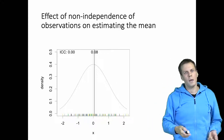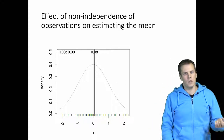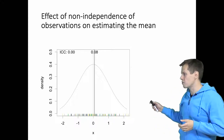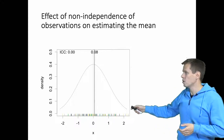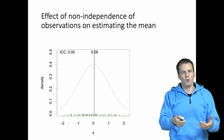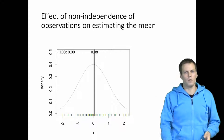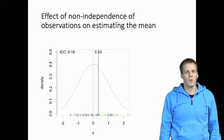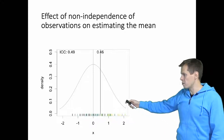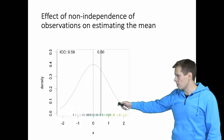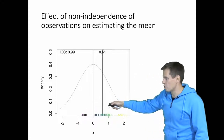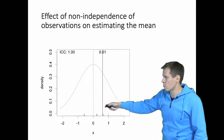What will happen if we increase the intraclass correlation? We make the yellow, green, and purple observations closer to one another. So let's start clustering the data. We can see that the yellow observations start to cluster here, the purple observations start to go here, and the green observations go somewhere in the middle.